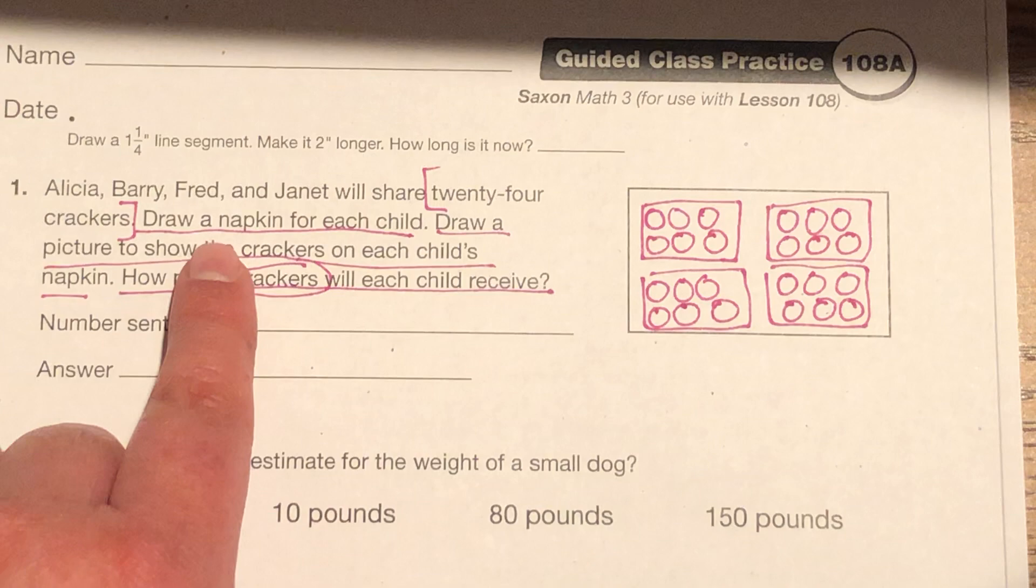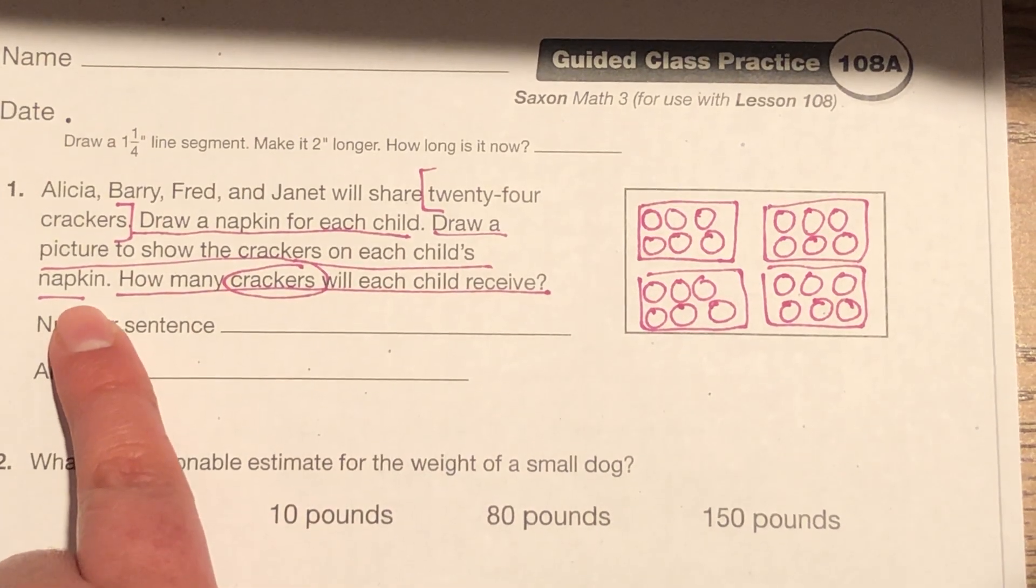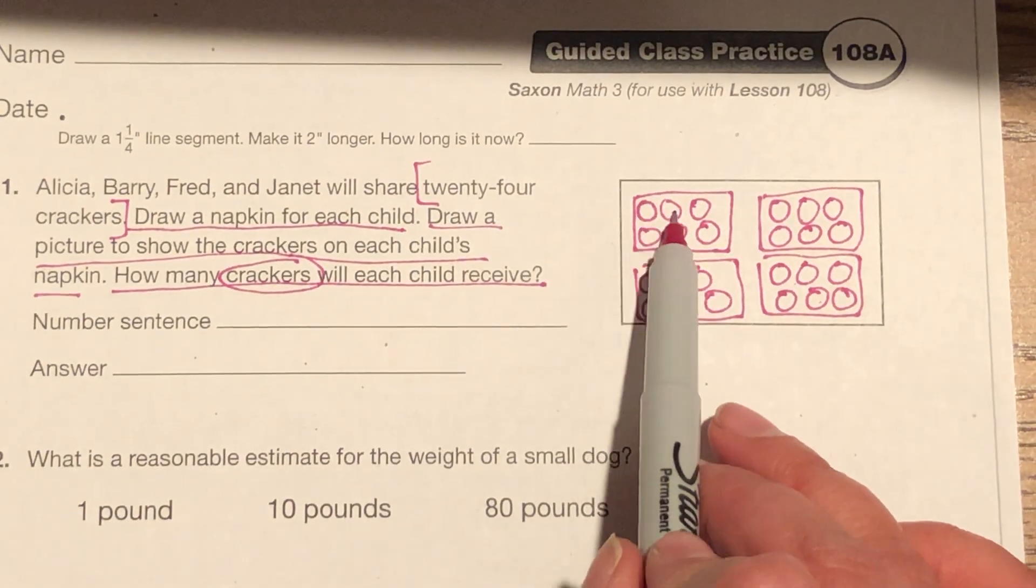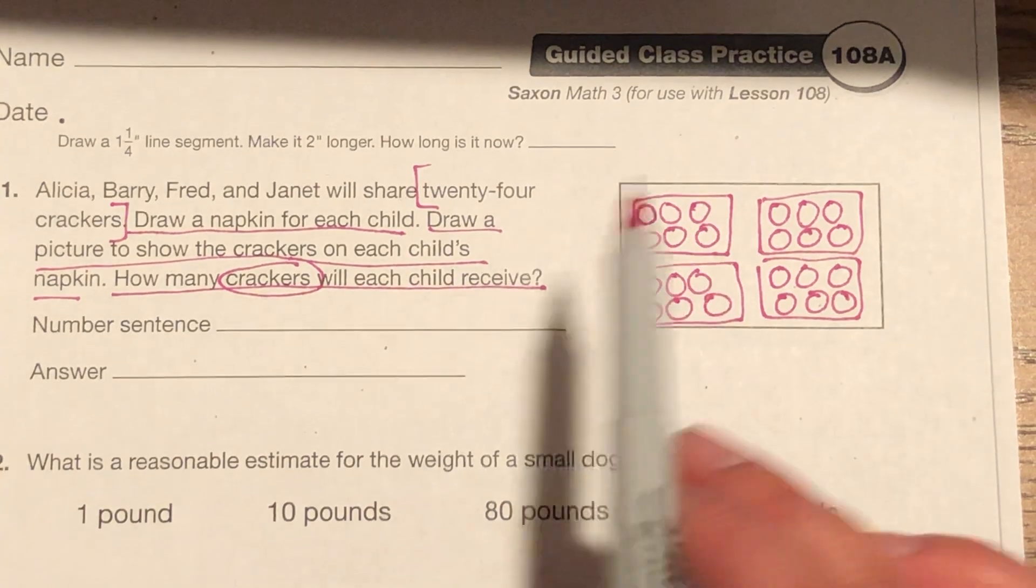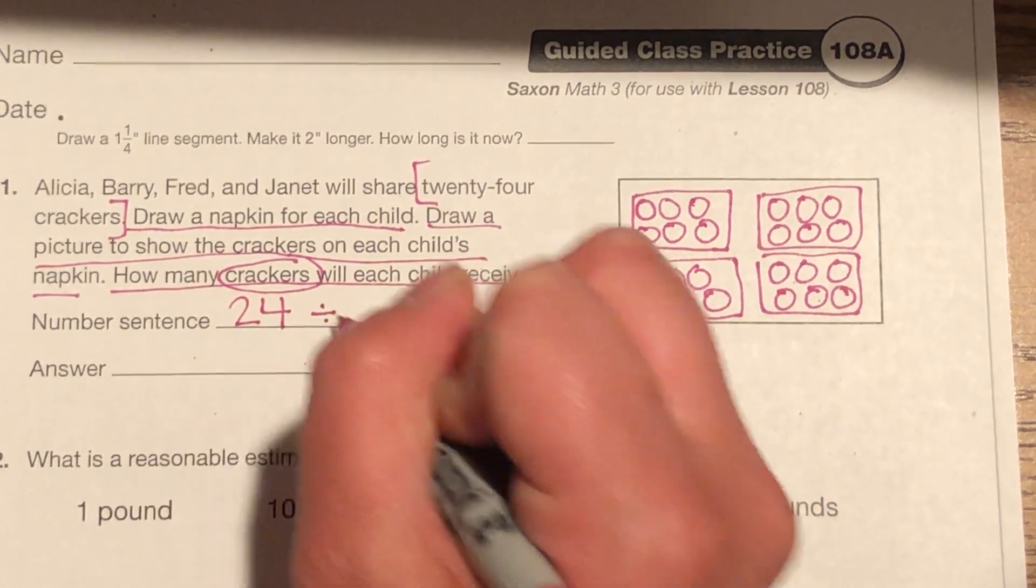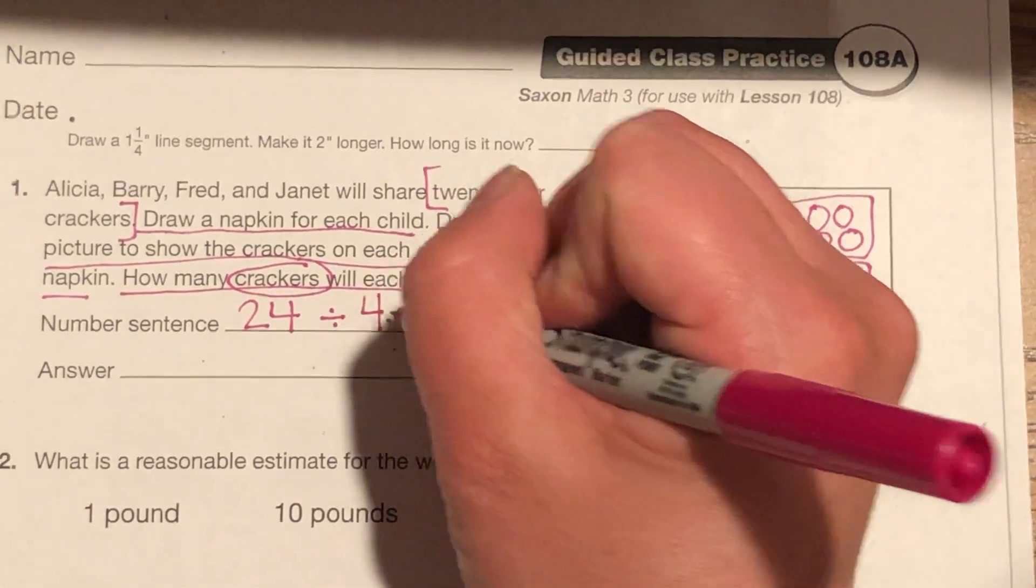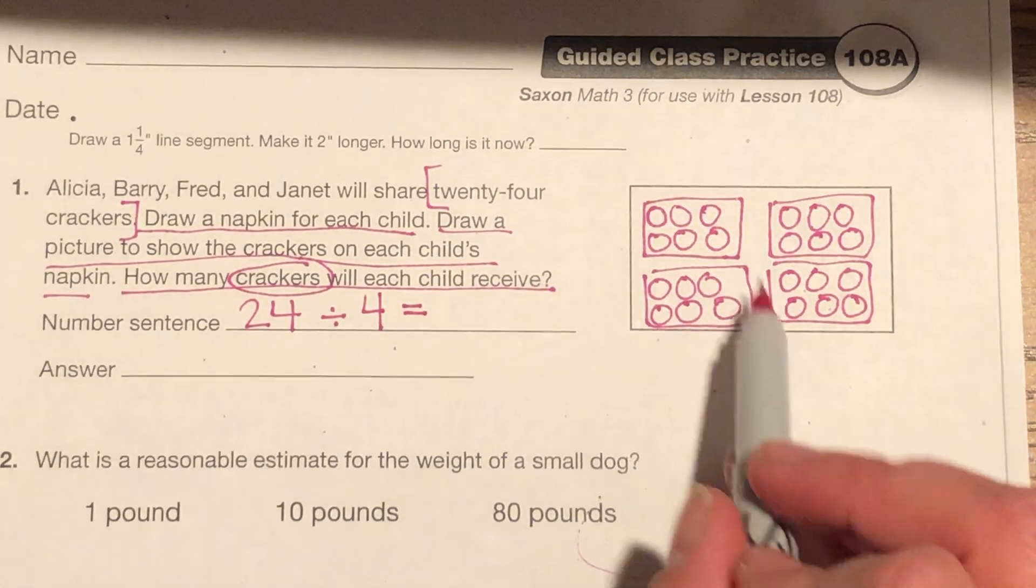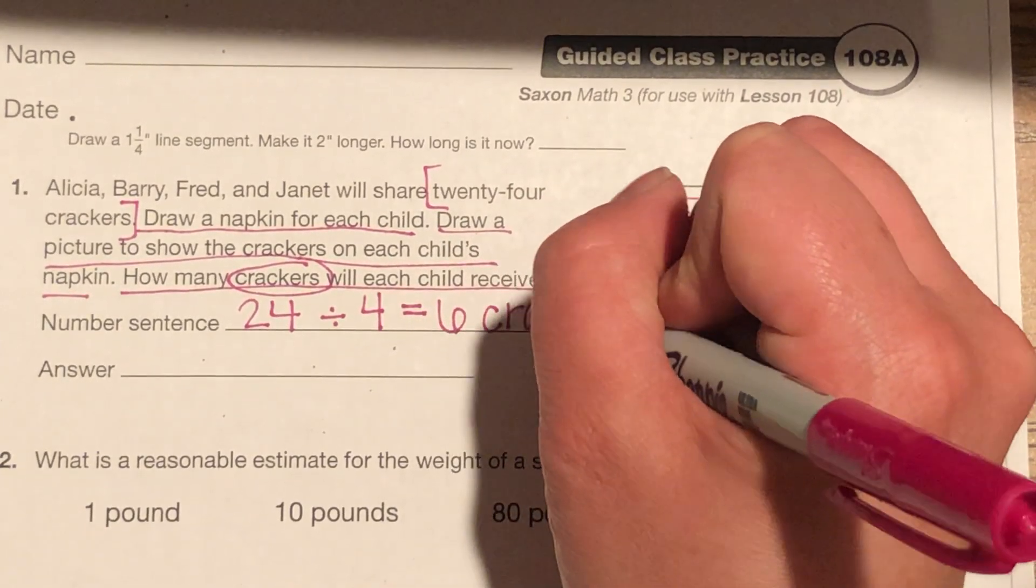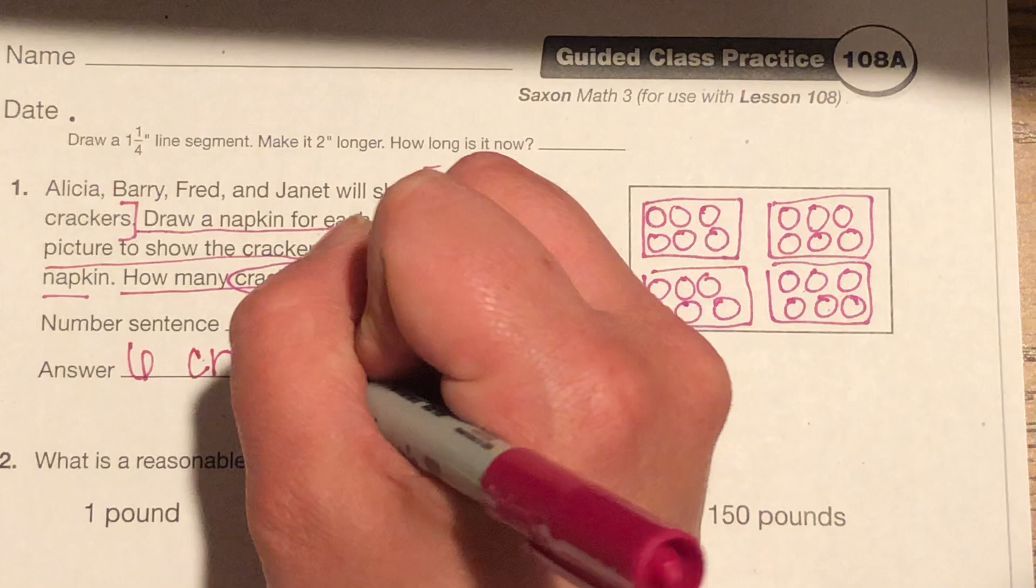Okay, so there are their napkins. So let's double check. Did I draw a napkin for each child? Yep. Did I draw a picture to show the crackers on each child's napkin? Sure did. How many crackers will each child receive? How many is that? 1, 2, 3, 4, 5, 6. So now let's draw our number sentence. We had 24 crackers. I'm just going to write that number 24. I'm going to divide it into, how many did we divide it into? 4, because it's between 4 children. And how many did each child get? 6. And it's asking me about crackers, so my answer needs to be in crackers. The answer, I'll repeat it down here, 6 crackers.